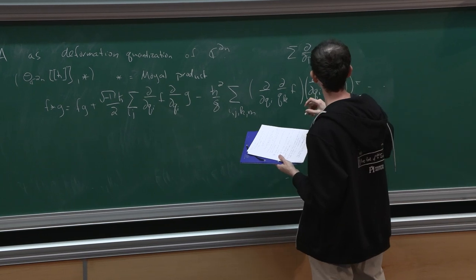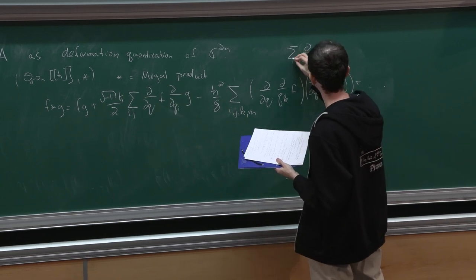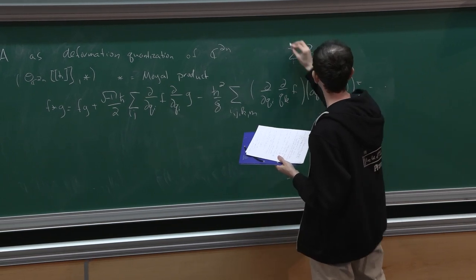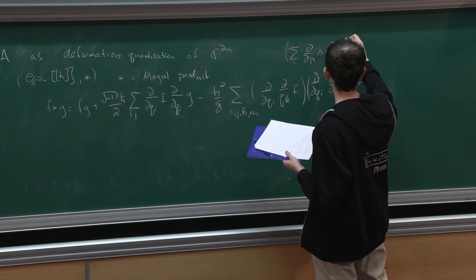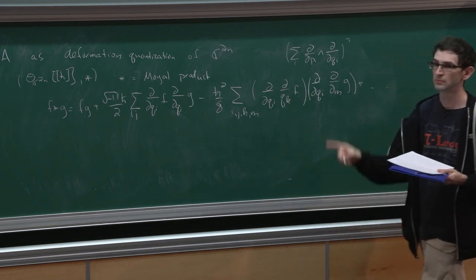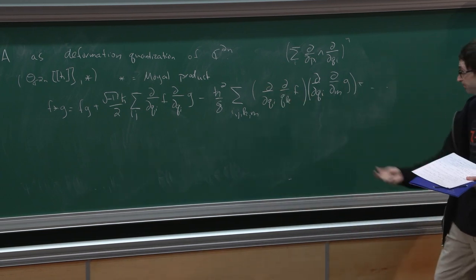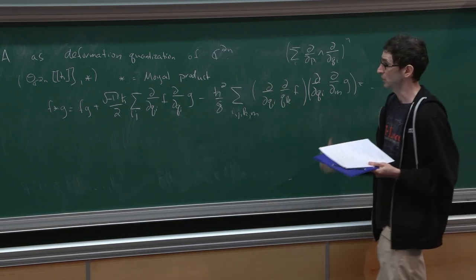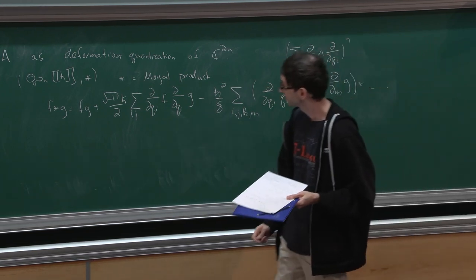This product, modulo ℏ, gives the commutative product. The commutator for this product, divided by ℏ and taken modulo ℏ, gives the Poisson bracket. Each term in the star product is obtained by taking powers of the standard Poisson bi-vector field corresponding to the symplectic form on C^{2n}.